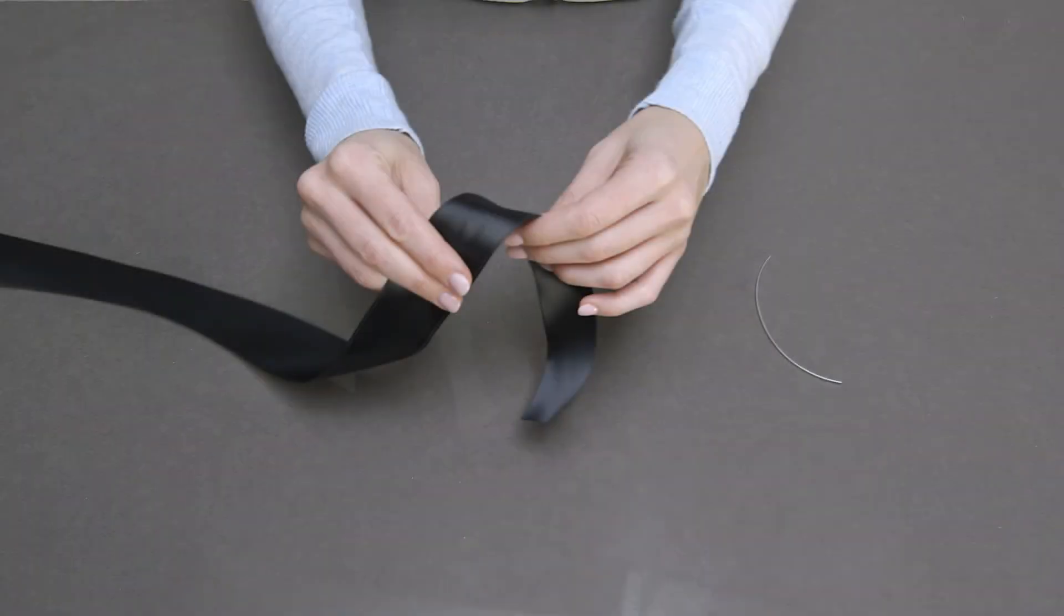We recommend using wired ribbon to make the florist bow, as it is easier to shape. Start with approximately 5 inches of ribbon at the end to form a tail.